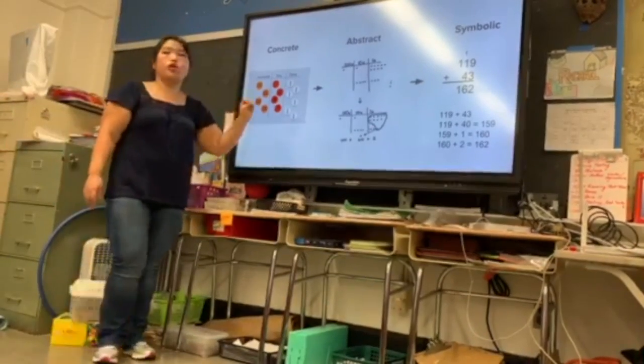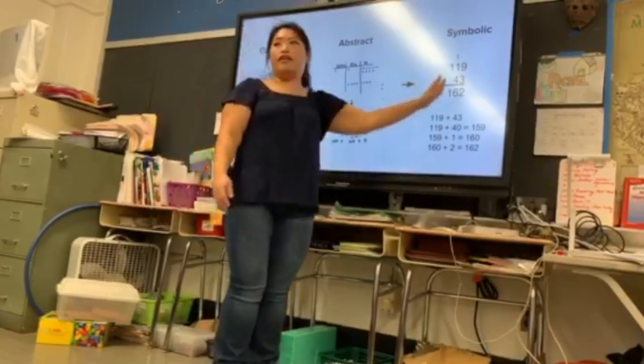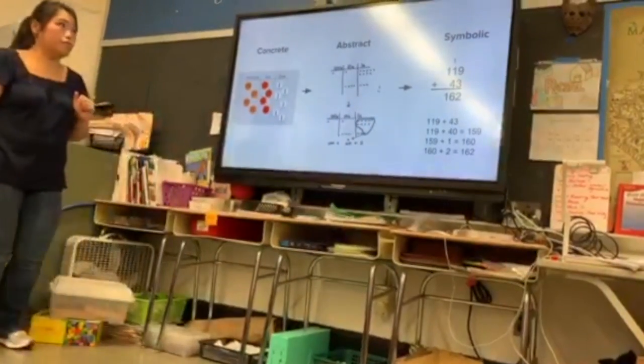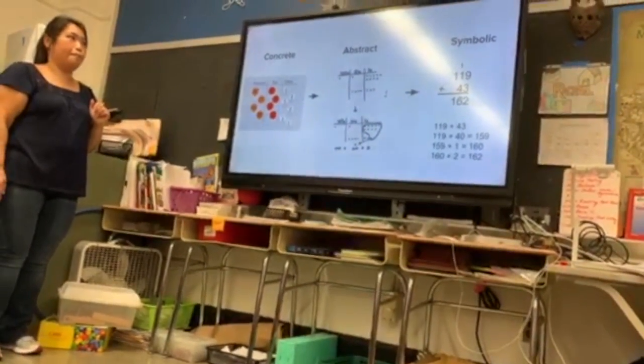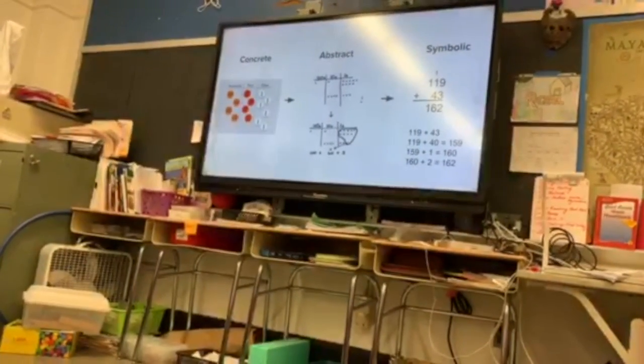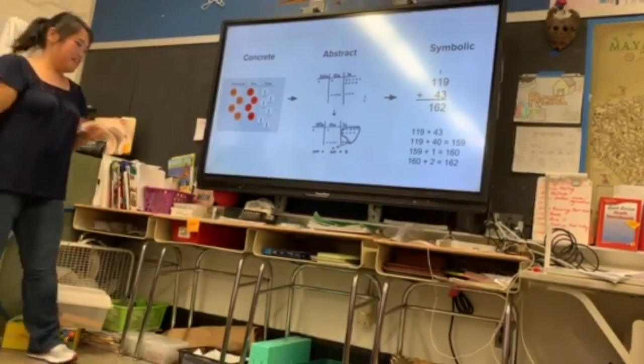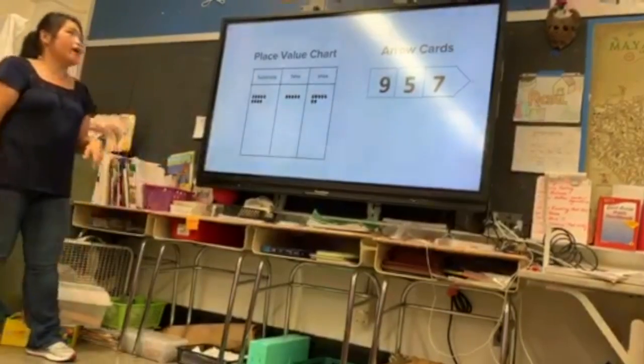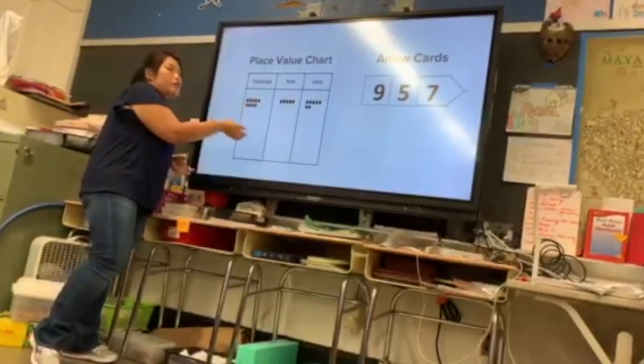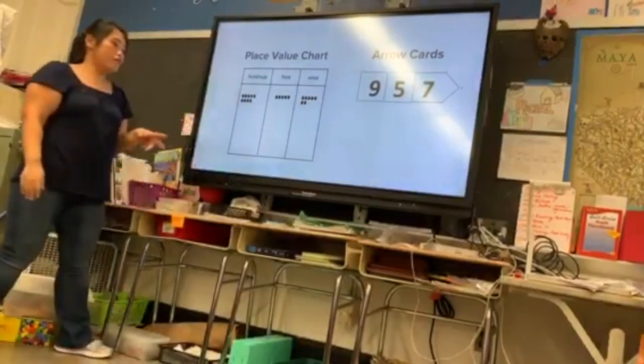Here's your concrete, going into your abstract where we draw those dots to represent a number to why this works. We have a place value chart. When we had this number 957, we represent 900, nine dots on it. Again you see those groups of five, five tens and seven ones.